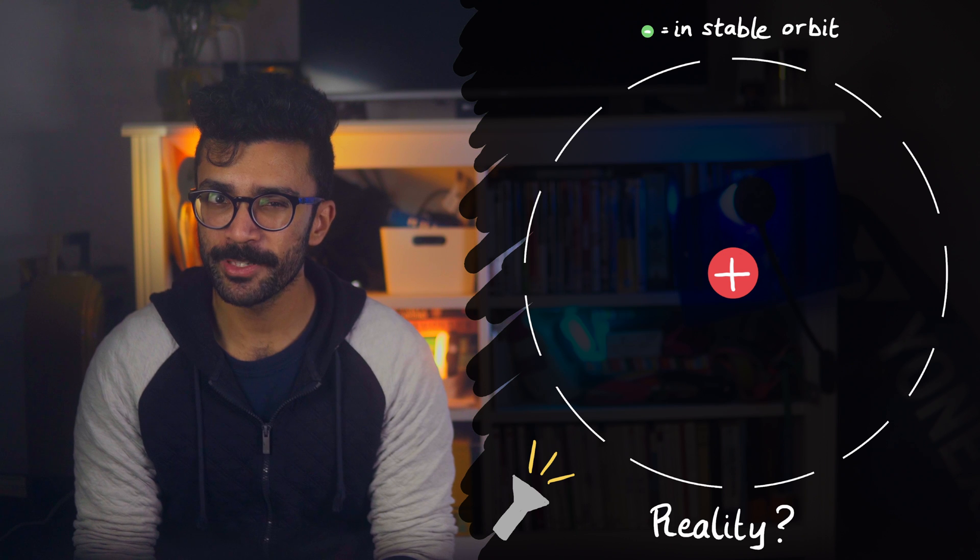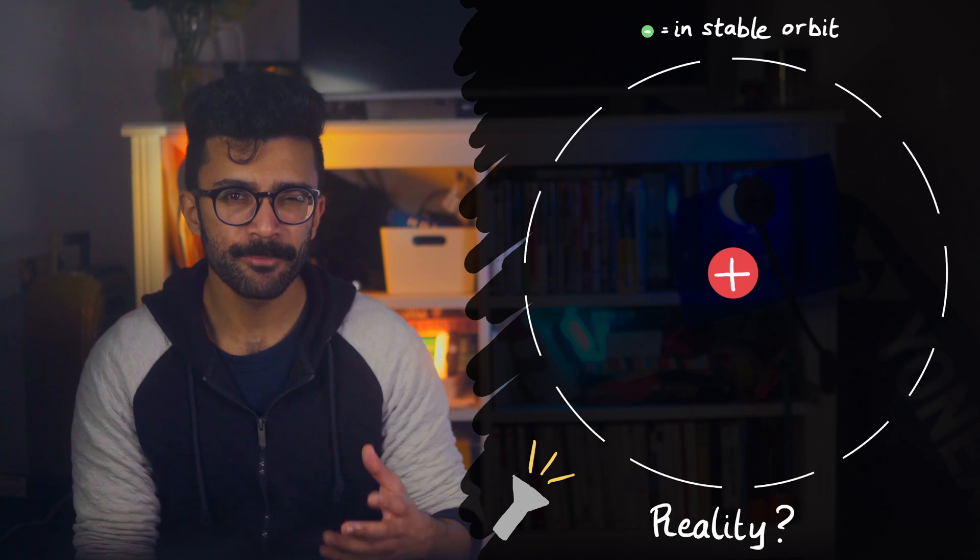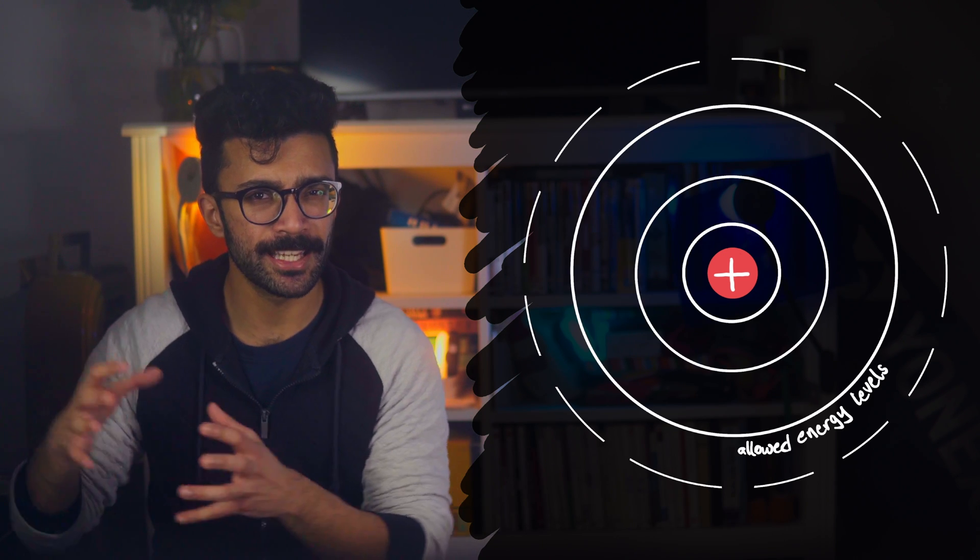Bohr realised that there must be something else going on here, namely that there must be something holding electrons in specific positions or specific distances away from the nucleus. This way, electrons could move only from one allowed energy level to another, and if they were losing energy going towards the nucleus, the electrons would emit radiation that matched the specific energy difference between the two levels.